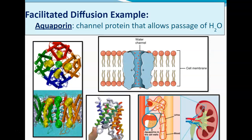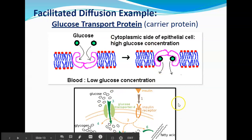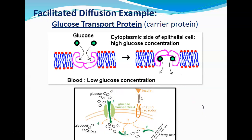A specific example is the aquaporin, which allows passage of water molecules. You can see the structure on the left and how it's embedded in the membrane, with a hydrophilic channel through which water freely passes. This happens naturally in the kidney where a lot of water exchange occurs. Another example is the glucose transport protein — a carrier protein that binds glucose and releases it on the other side of the cell, allowing glucose from food to enter the blood to balance concentration.